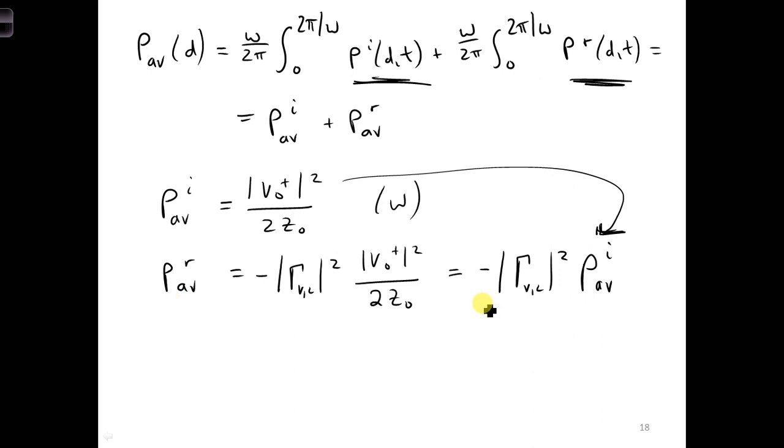Now notice the negative sign here in the reflected power. The negative sign just gives us a direction. It tells us that the reflected power flows towards the generator, so in the negative direction compared to the positive direction, which we take as towards the load.